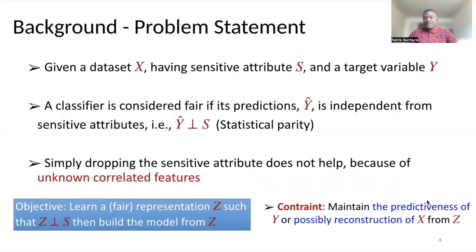This means that regardless whatever the sensitive attribute of people are, the outcome of the model should be the same. And this is what we call statistical parity or demographic parity. It is shown that simply dropping the sensitive attribute from the feature space does not help because there may exist other features that are correlated with the sensitive attribute. And in some cases, those features are unknown.